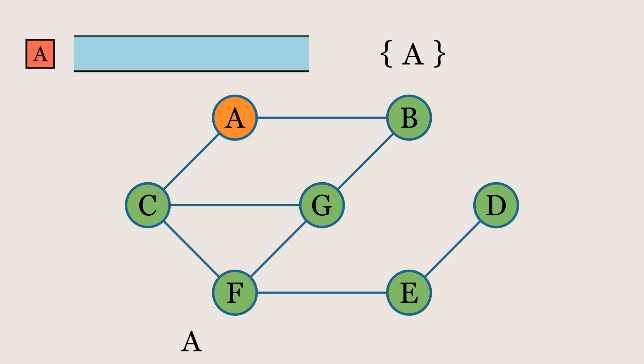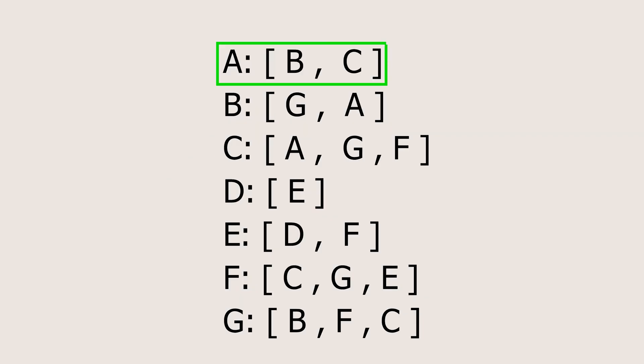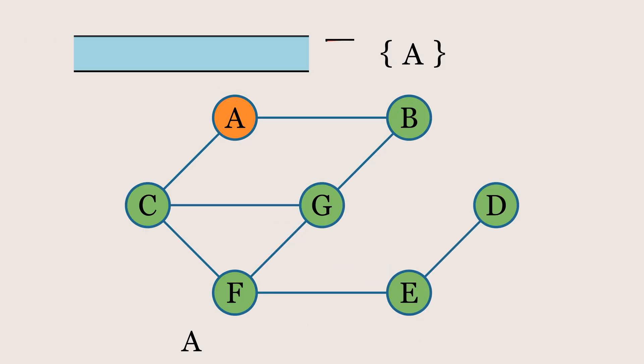Next, we append any unvisited neighbors of the current node to the queue. In this case, both neighbors of the node are unvisited, so we add both to the queue. But what about the order? For that, we refer to the adjacency list of the graph, which contains the sequence in which the neighbors are stored. In this case, node B appears before node C in the adjacency list, so we append them to the queue in that order, first B, then C.